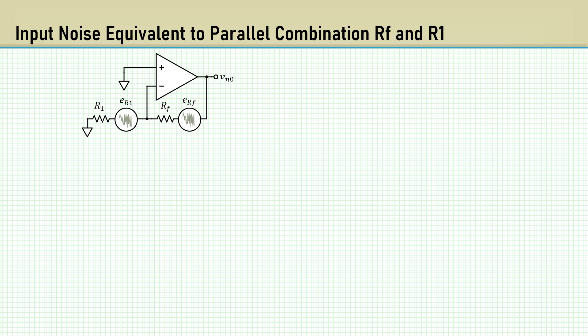Here's the RSS equations again, with the noise of R1 gained up by the inverting gain, RF over R1. For brevity, let's let M equal 4KTB.